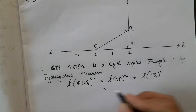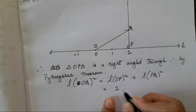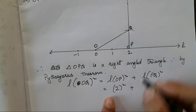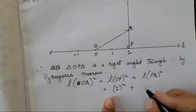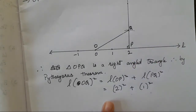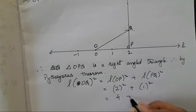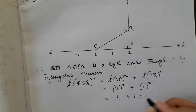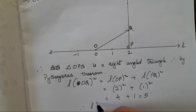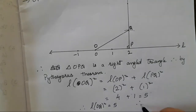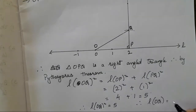Mark the distances: OP is 2 units, so 2 squared. PQ is 1 unit, so 1 squared. So this is going to be 4 plus 1, which is supposed to be 5. Therefore, length of OQ square is supposed to be 5. Therefore, length of OQ is root 5.